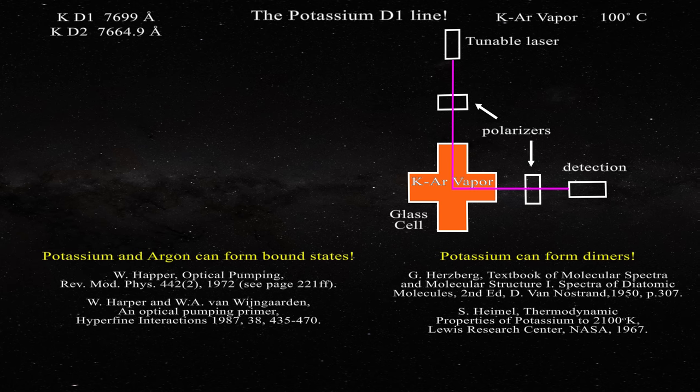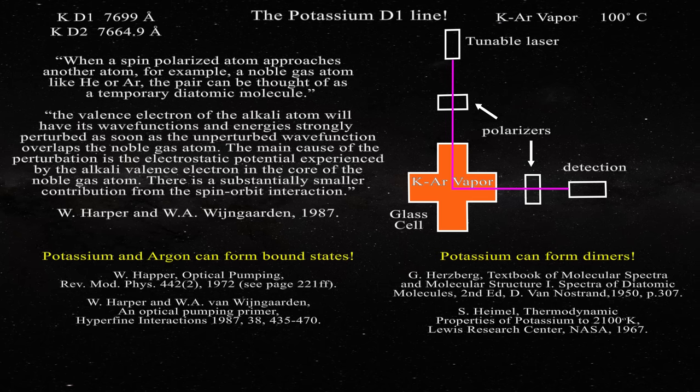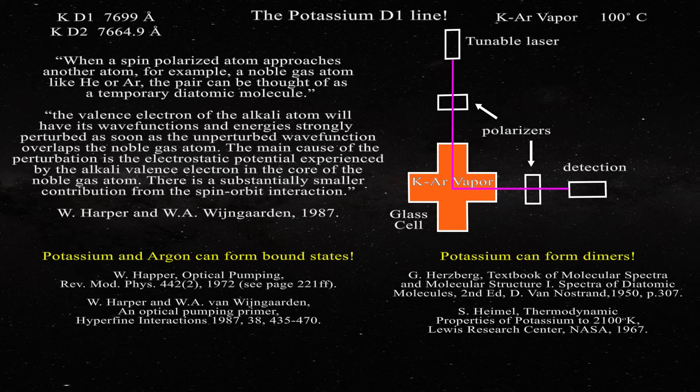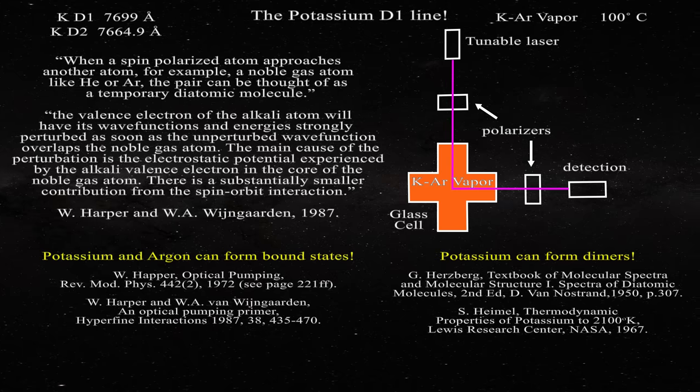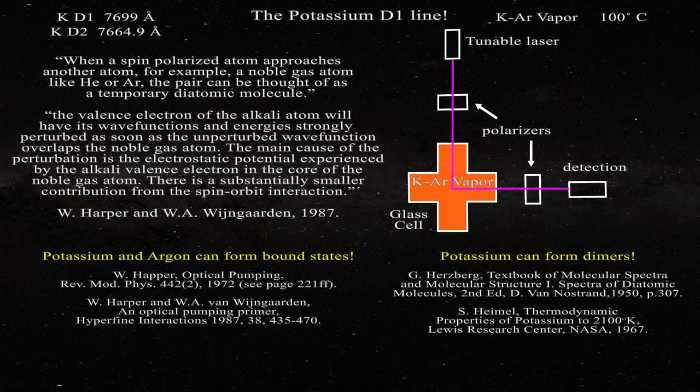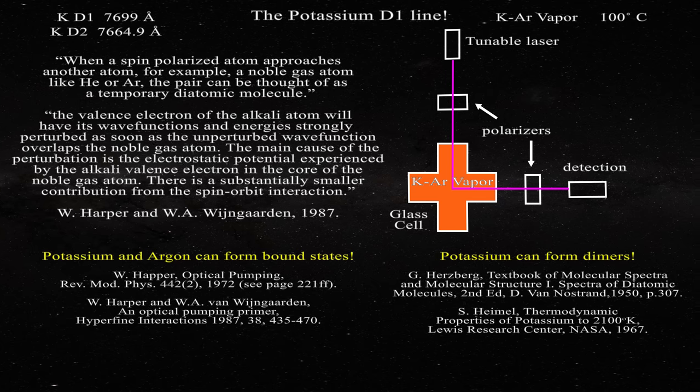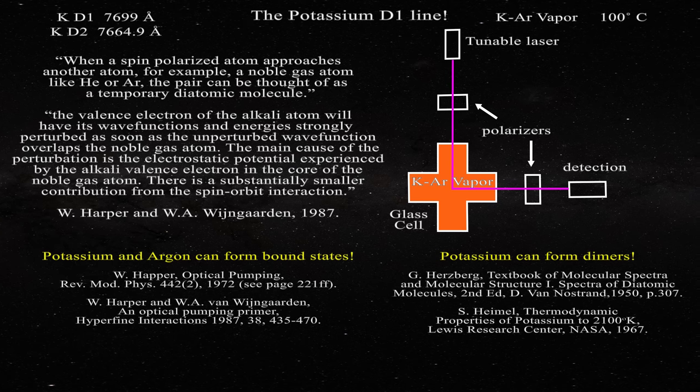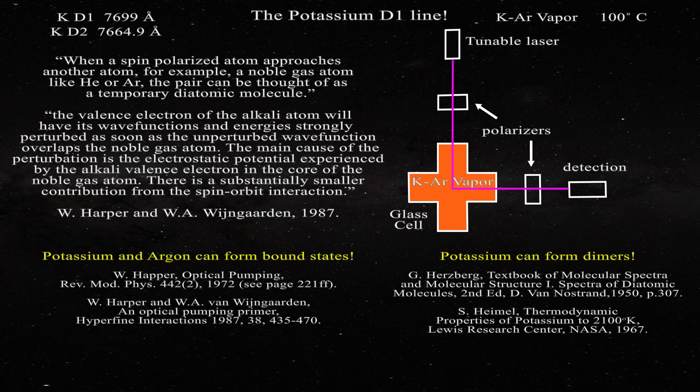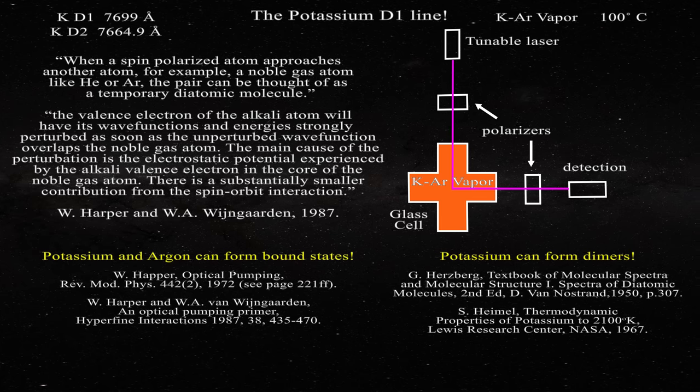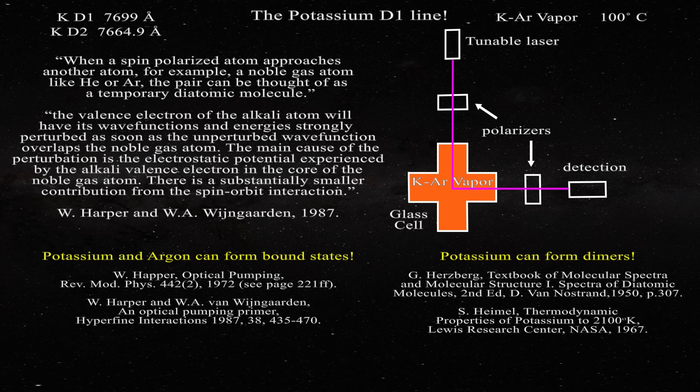Even more troubling, potassium and argon have long been known to interact and form bound states in an argon matrix, as can be gathered in these two papers. Here is a relevant quotation relative to optical pumping, a common method in spectroscopy. When a spin-polarized atom approaches another atom, for example a noble gas atom like helium or argon, the pair can be thought of as a temporary diatomic molecule. They go on. The valence electron of the alkali atom will have its wave functions and energies strongly perturbed as soon as the unperturbed wave function overlaps the noble gas atom. The main cause of the perturbation is electrostatic potential experienced by the alkali valence electron in the core of the noble gas atom. There is a substantially smaller contribution from the spin-orbit interaction.